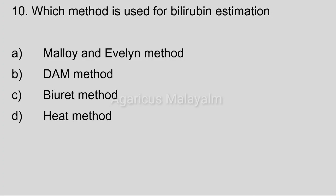Tenth question: Which method is used for bilirubin estimation? Option A: Malloy and Evelyn method. Option B: DAM method. Option C: biuret method. Option D: heat method. Correct answer: Option A, Malloy and Evelyn method.